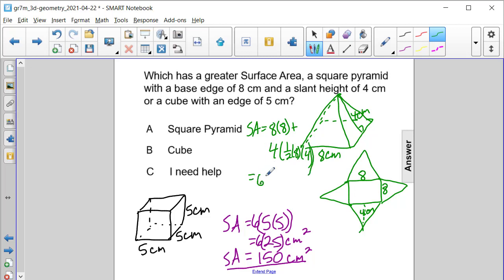So we're going to have 64 for the area of our base, plus 4 times 1 half is 2. 8 times 4 is 32. 32 times 2 is 64. And then if we add these two values together, it will be 128 square centimeters for the surface area of the pyramid.